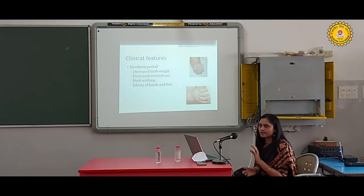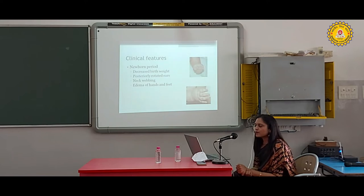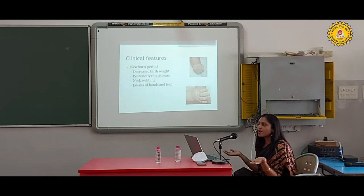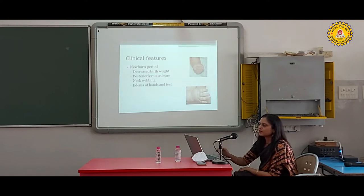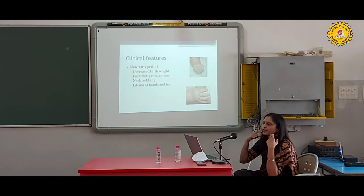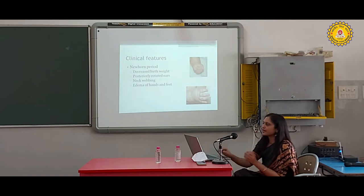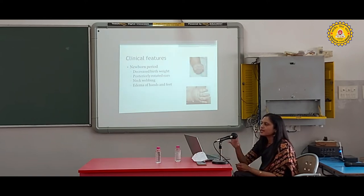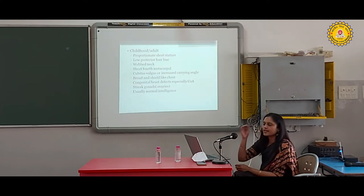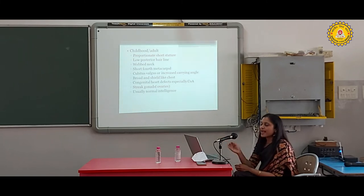How do we identify Turner syndrome females? In the newborn period, we generally miss it. We can't identify whether a female child is normal or has Turner syndrome. Rarely, some present with low birth weight, ear malformations, posteriorly rotated ears, short neck with webbing, or edema of hands and feet. But it's very difficult to pick up Turner syndrome in the newborn period - the child looks like a normal female. They are generally diagnosed in childhood or adulthood.